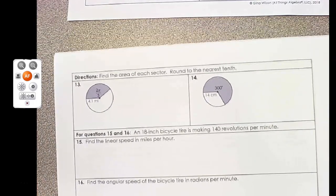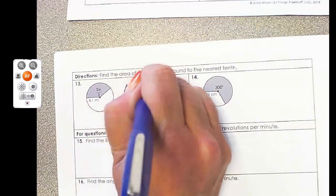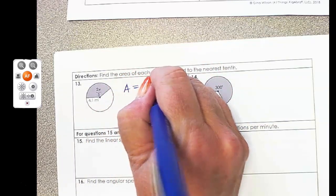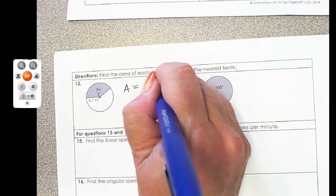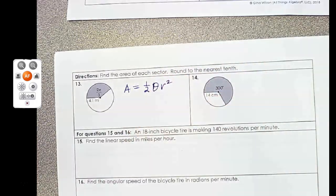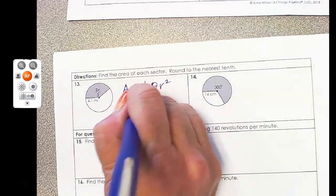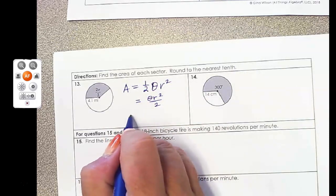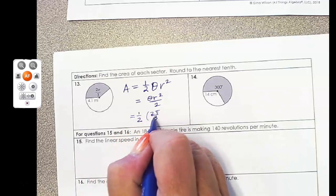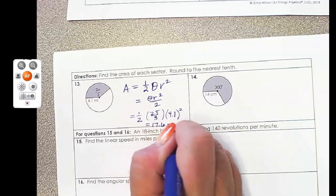Next, we want to find the area of a sector. So sector area, we want to do 1/2 times θ and then R squared. So R is the radius. Maybe θR² over 2 is another way to write it. So let's multiply it out. We get 1/2 times 2π over 3 times 4.1 squared. And our final answer, 17.6 square miles.